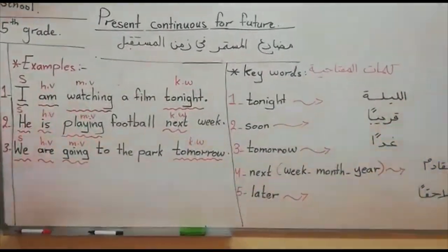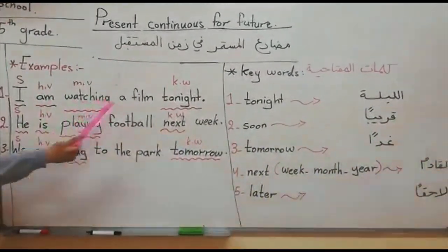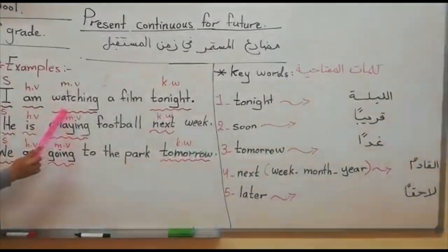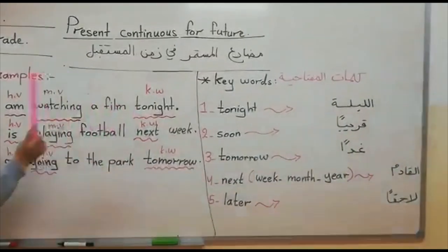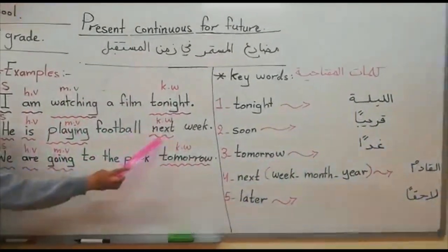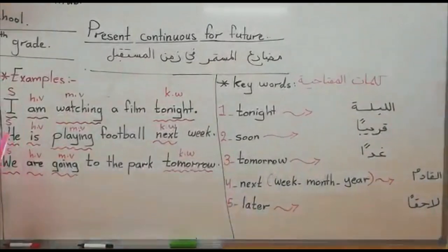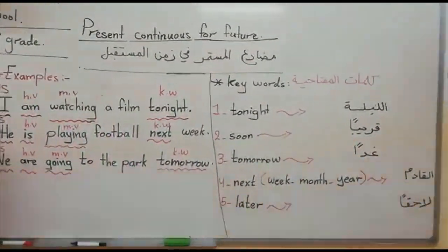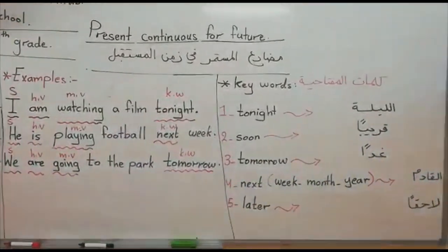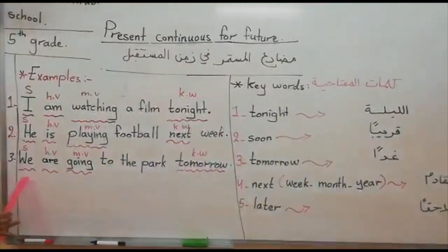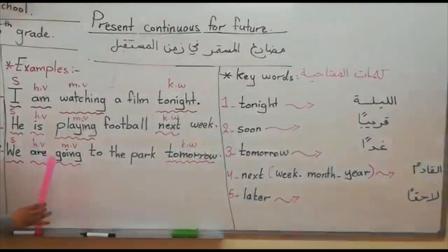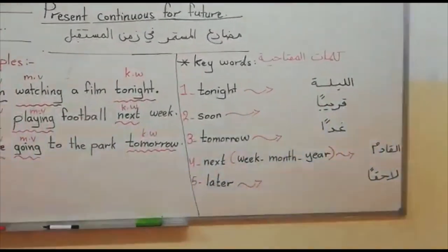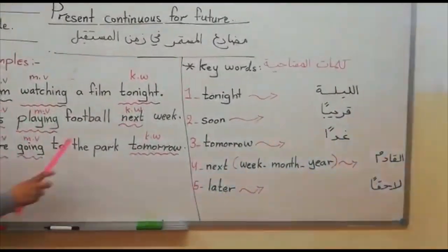For example: 'I am watching a film tonight.' Here, I is the subject, am is the helping verb, watching is the main verb, and tonight is the keyword. 'He is playing football next week.' He is the subject, is is the helping verb, playing is the main verb, and next week is the keyword. 'We are going to the park tomorrow.' We is the subject, are is the helping verb, going is the main verb, and tomorrow is the keyword.